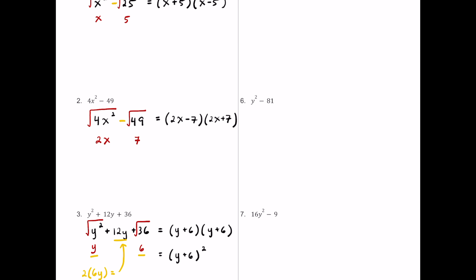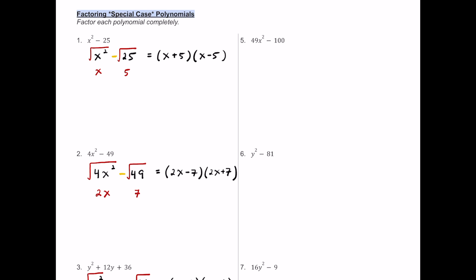For number five we have 49x squared minus 100. This has a subtraction sign, so it could be a difference of squares. The square root of 49x squared is 7x and the square root of 100 is 10. This is a difference of squares, so the two binomials are (7x plus 10) and (7x minus 10). That's the factored form.